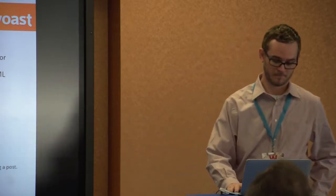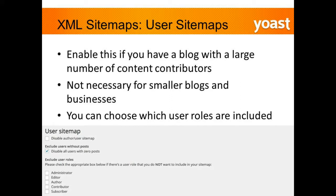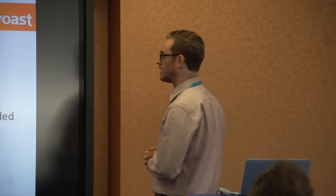Use your domain.com/sitemap and go to Webmaster Tools to include it manually — there's a section in there to submit your XML sitemap. For user sitemaps, only keep this option checked if you have a very large website with a lot of contributors and you want to make sure they're all getting credit. For smaller blogs and businesses, it's not really necessary. You can also choose which user roles to include — typically you just want your authors to show up.